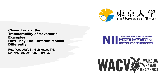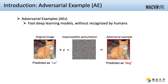Welcome to my talk on a closer look at the transferability of adversarial examples, and how they fool different models differently. Although neural network-based computer vision models achieve great performance, they are known to be vulnerable to adversarial examples, which are maliciously perturbed images.